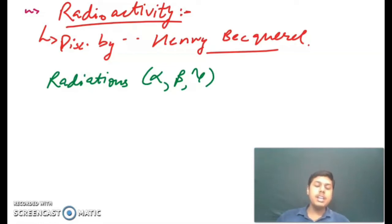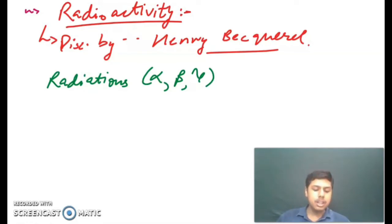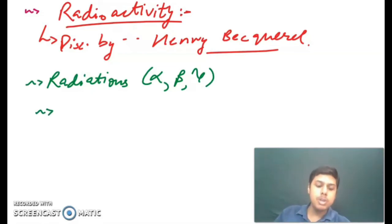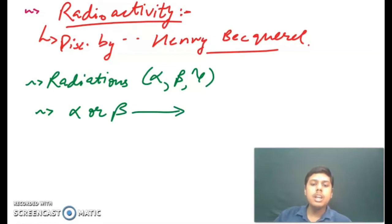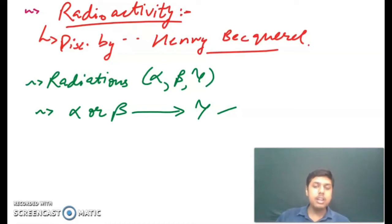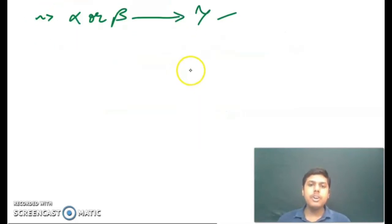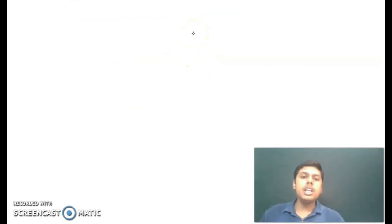In radioactive decay, an unstable nucleus emits an alpha particle or beta particle. After the emission of an alpha or beta particle, the remaining nucleus may emit a gamma particle and get converted into a more stable nucleus. It must be noted that gamma emission only follows alpha or beta emission, and the gamma emission makes the nucleus more stable.